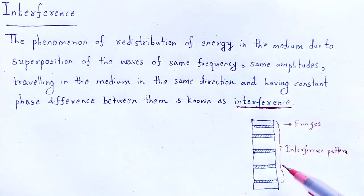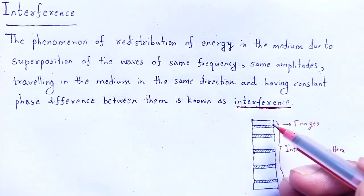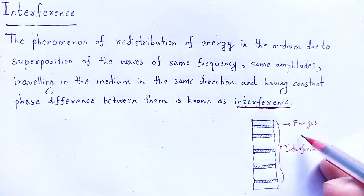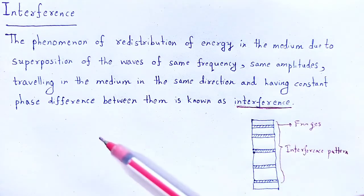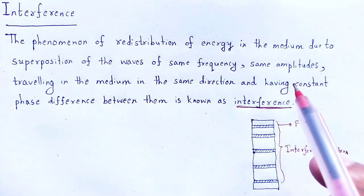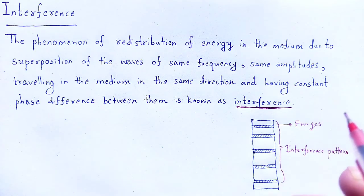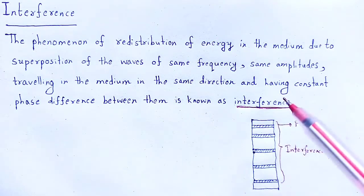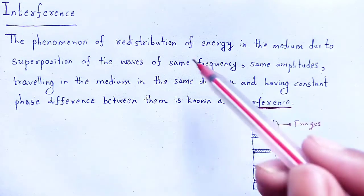These are dark fringes and bright fringes, and this pattern is known as the interference pattern. Alternate dark and bright fringes are obtained on the screen due to the superposition of two waves having the same frequency, same amplitudes, traveling in the same direction with constant phase difference — that phenomenon is known as interference.